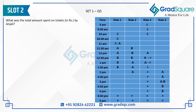Question 5: What was the total amount spent on tickets by Anjali? Anjali took all 4 rides — Ride 1 (Rs.20), Ride 2 (Rs.50), Ride 3 (Rs.30), and Ride 4 (Rs.40) — totaling Rs.140.